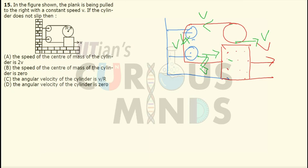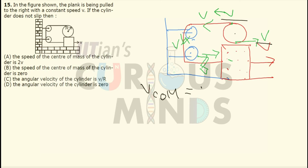So if this string is going with velocity V, the top-most point has a velocity V in the left-hand side direction, and the bottom-most point is going in the right-hand side direction with velocity V. Therefore, the velocity of the center of mass will be equal to (V + (−V)) / 2, which equals zero.